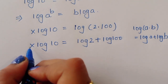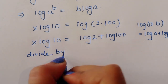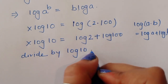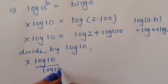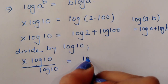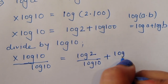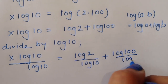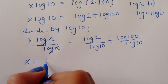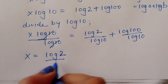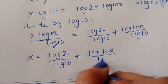To find x, we divide both sides by log(10). So x = log(2)/log(10) + log(100)/log(10). Since log(10) cancels on the left, x equals those two terms.